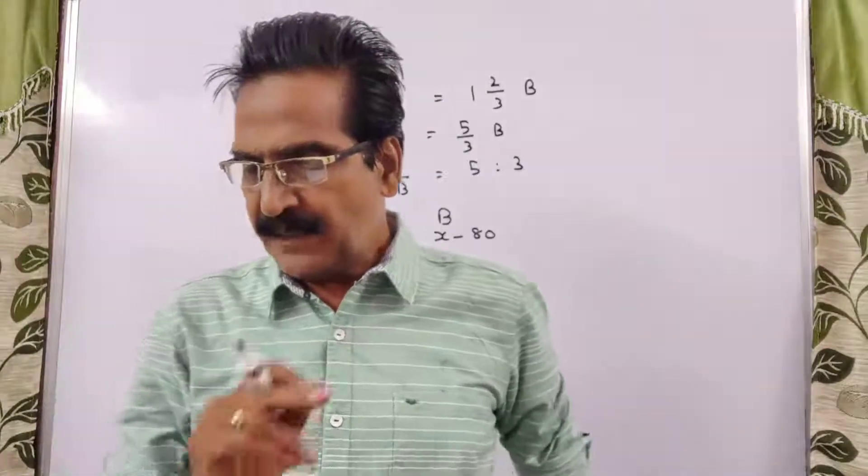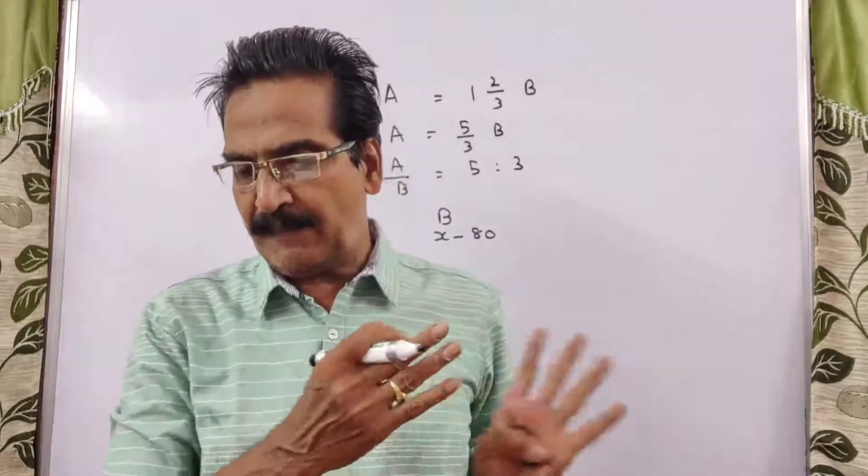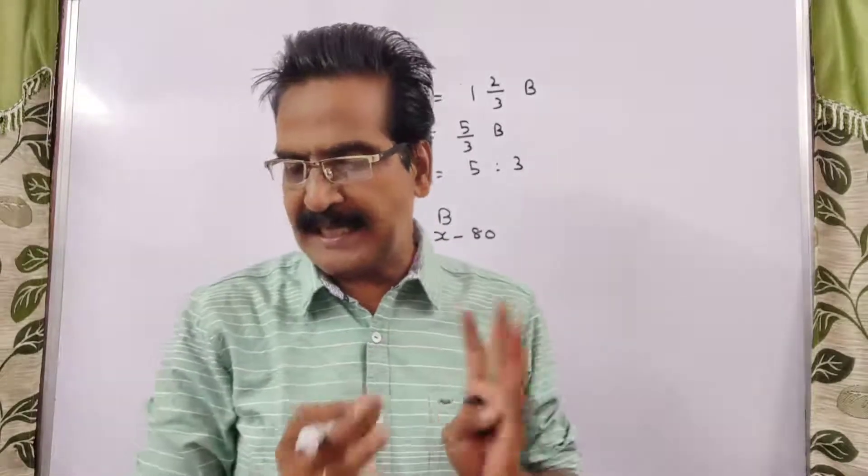See, here the question is, if A gives B a start of 80 meters, how far must the winning post be from the starting point so that A and B reach at the same time?